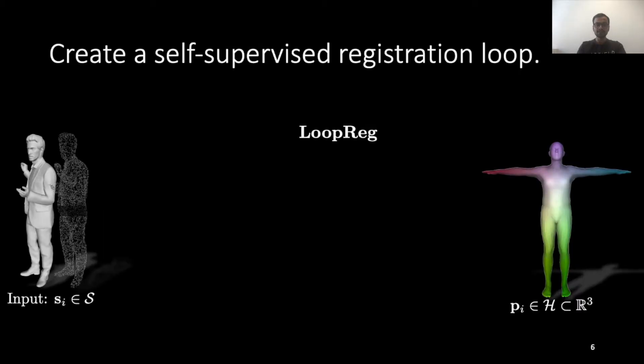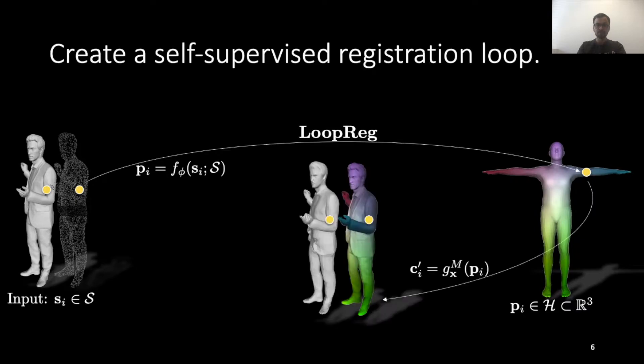Our key idea is to formulate registration as a continuous, differentiable and self-supervised loop. For every input scan point, we use a neural network to predict its correspondence to the parametric model. We then deform the corresponding point according to the model parameters and minimize the distance between the scan point and the transformed corresponding point.